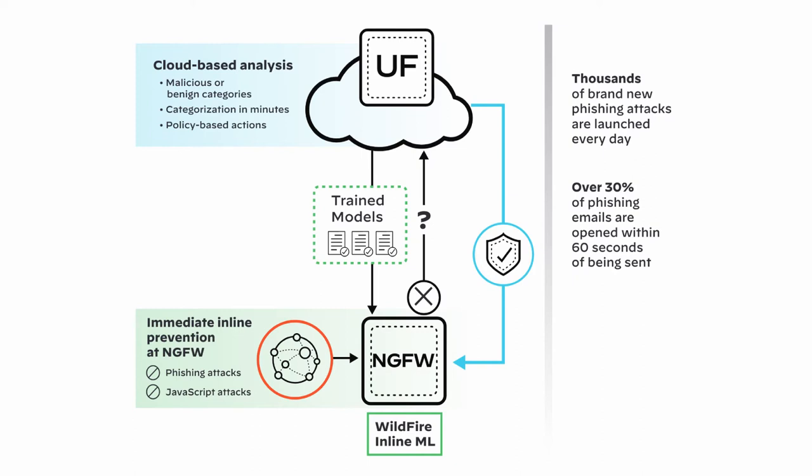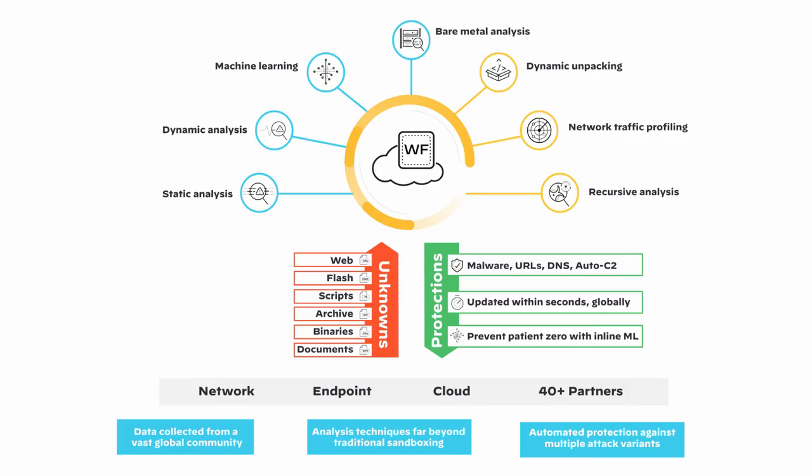The machine learning models are updated daily and scanned files are simultaneously routed to WildFire for analysis. This not only builds in a feedback loop for false positives, but also drives rapid prevention. According to Palo Alto, up to 95% of file and web-based threats can be prevented inline without requiring analysis from the WildFire or URL filtering cloud.